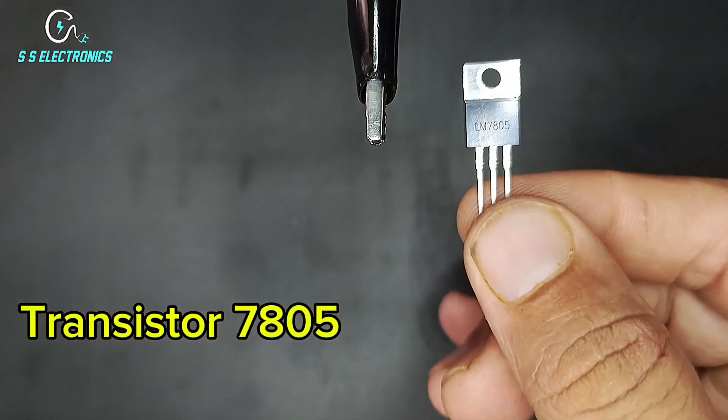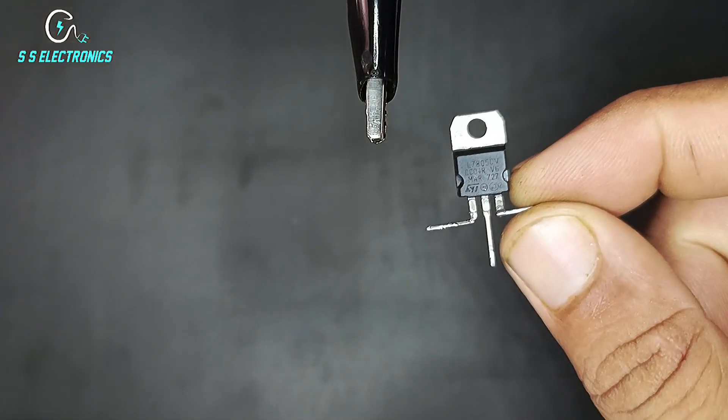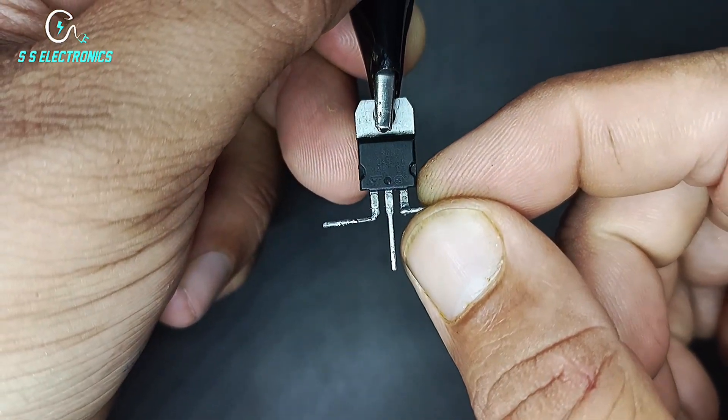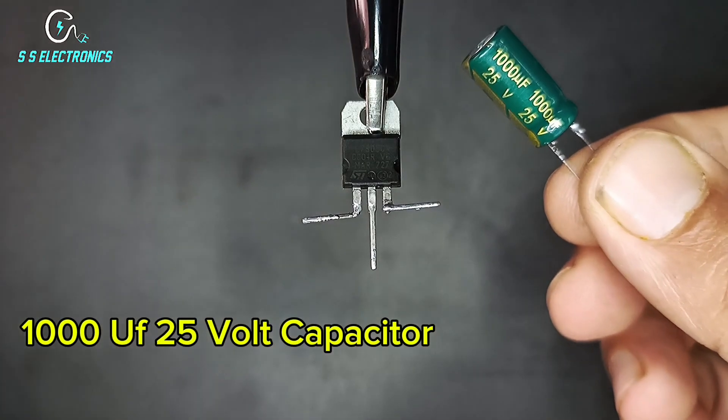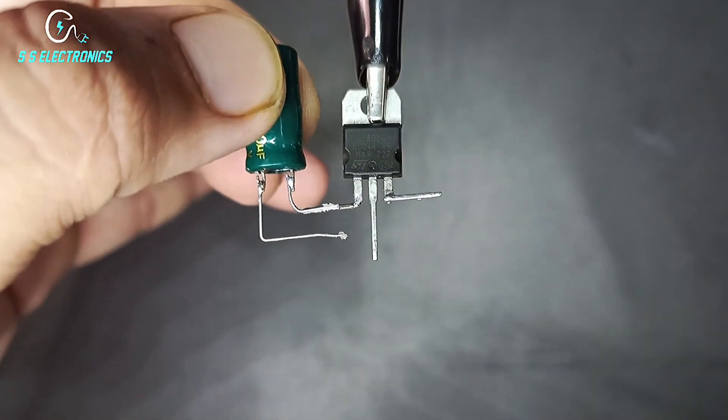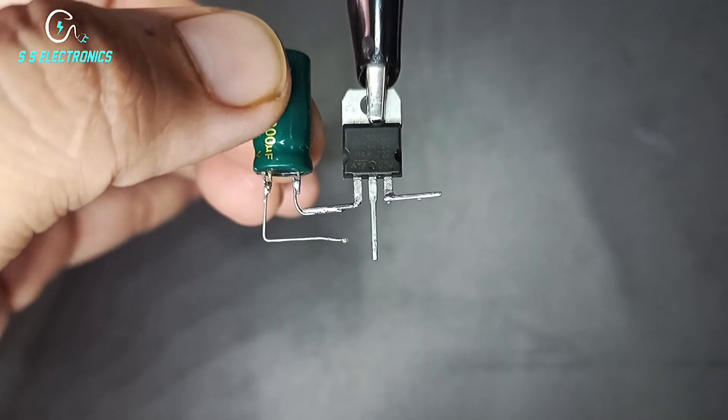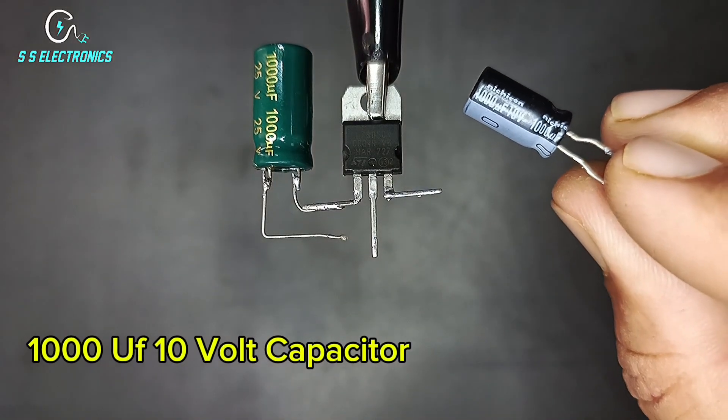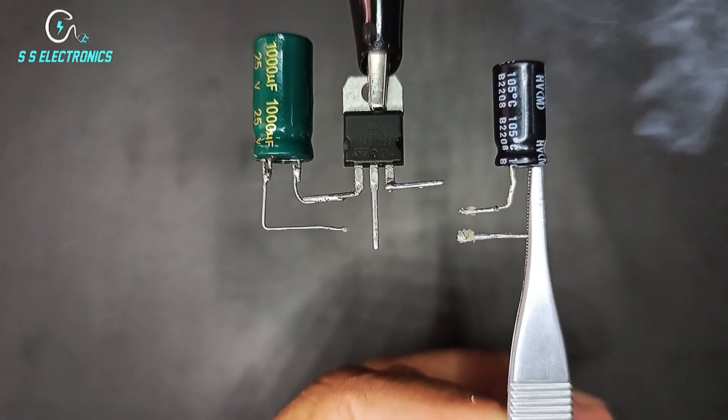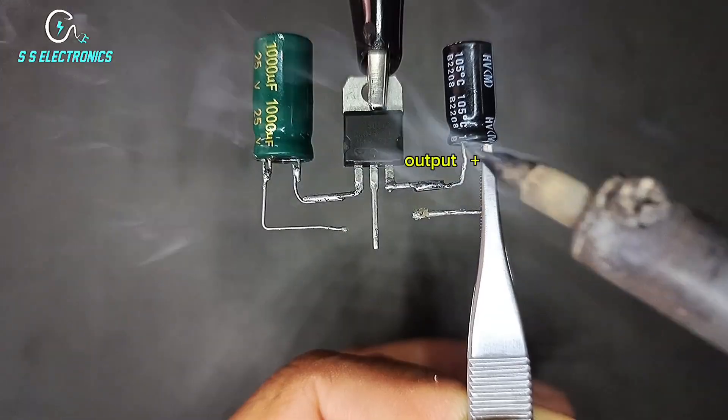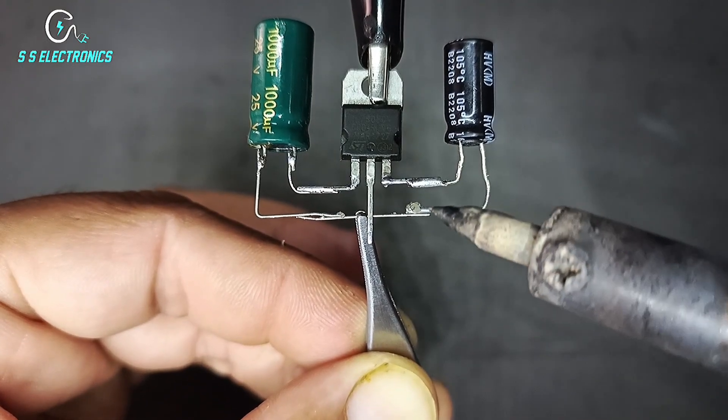Transistor 7805. 1000µF 25 volt capacitor - capacitor positive side connecting with transistor input pin. 1000µF 10 volt capacitor - capacitor positive side connecting with transistor output pin. Both capacitor negative pins connecting with transistor ground pin.